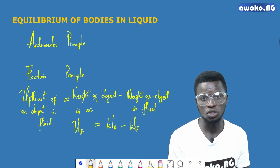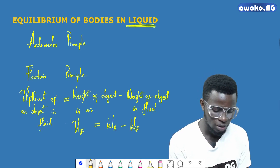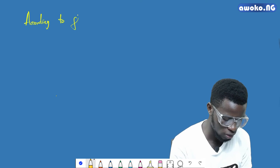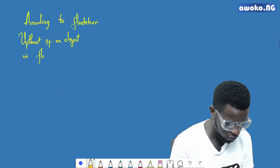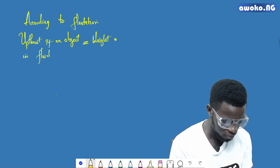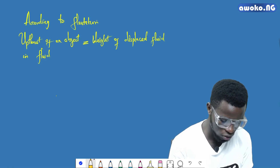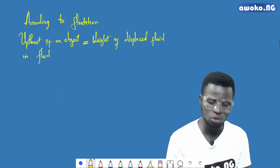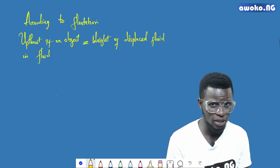You should know that fluid can actually be liquid or gas, but in this case we are considering the equilibrium of bodies in liquids. According to the principle of flotation, the upthrust of an object in a fluid is equal to the weight of the displaced fluid, because an object will only float when the upthrust exerted on it by the fluid is equal to the weight of the fluid displaced.